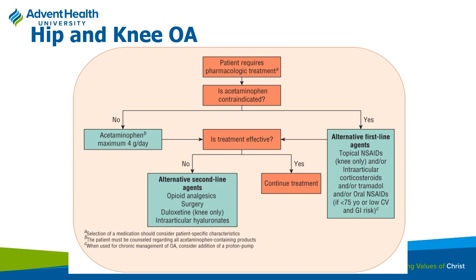Looking at the flow chart of how to manage osteoarthritis patients: first ask, is acetaminophen contraindicated? That would be patients with significant liver disease or an allergy. If not contraindicated, start there—it's the safest and cheapest option. If they can't take Tylenol, try topical products. If it's just their knee bothering them, try topical Voltaren or capsaicin—those can be totally effective.